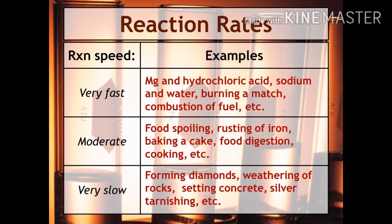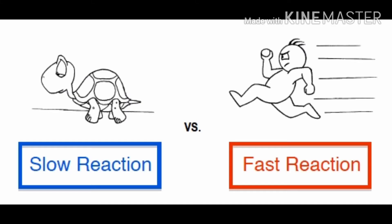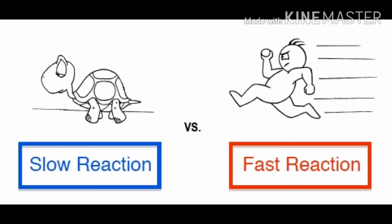Now we will learn the next concept, that is rate of chemical reaction. The reaction which is completed in a short time is called fast reaction, and the reaction which takes longer time for completion is called slow reaction. So depending upon the rate of chemical reaction, there are two types: slow reaction and fast reaction.